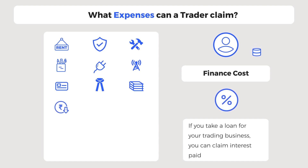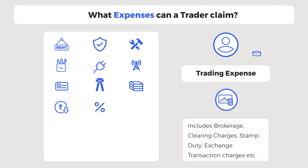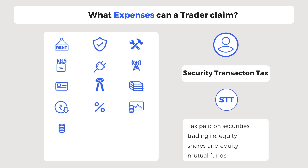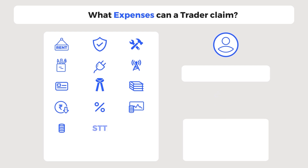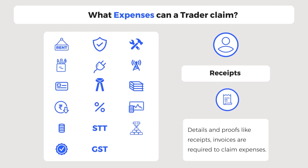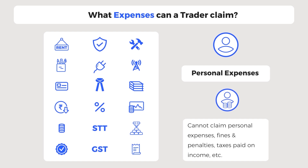Finance cost — if you take a loan for your trading business, you can claim the interest paid on such loan as a deductible expense. Trading expenses include brokerage, turnover fees, clearing expense, exchange transaction tax, stamp duty, GST, STT, etc. Any other business expense directly related to your trading business can also be claimed. You can claim deductions for certain taxes paid such as security transaction tax on securities trading, commodities transaction tax on commodities trading, stamp duty on transfer of securities, and GST paid on trading expenses. To claim all these expenses, you need details and proofs like receipts and invoices. You cannot claim personal expenses, fines, penalties, tax paid on income, cash payments above 20,000, or TDS collected but not deposited.